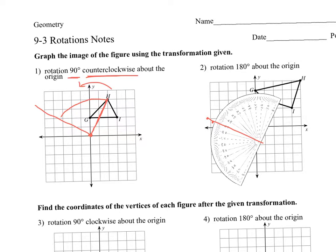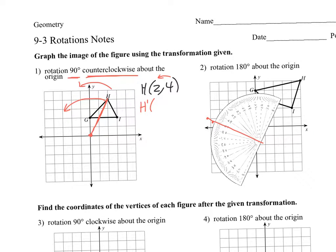Being more specific, how you calculate this can be a little confusing, but we're going to talk about how to do that. So the way this works mathematically: H here was originally at (2, 4). So when you rotate, depending on the quadrant you go into — we're moving H over into this quadrant — what happens is the new point H prime, you switch the X and Y.